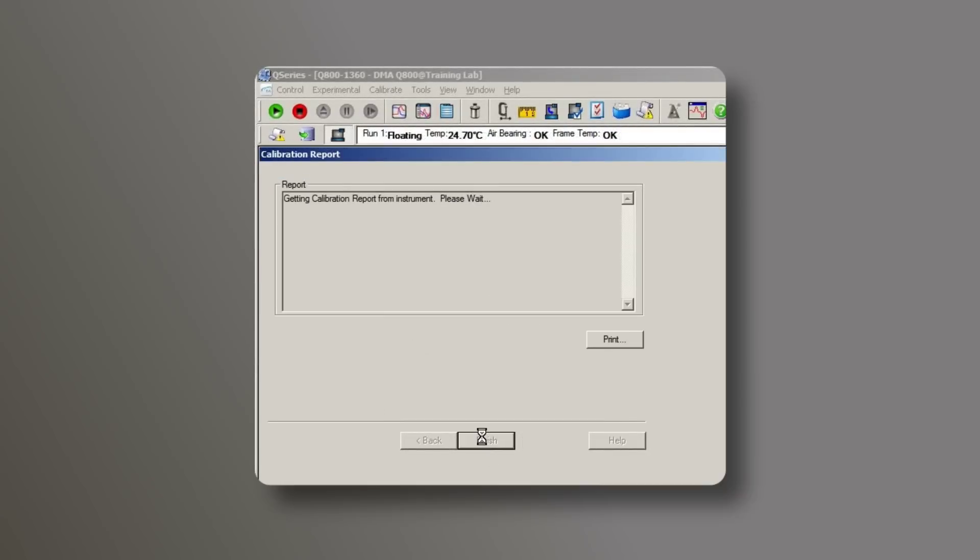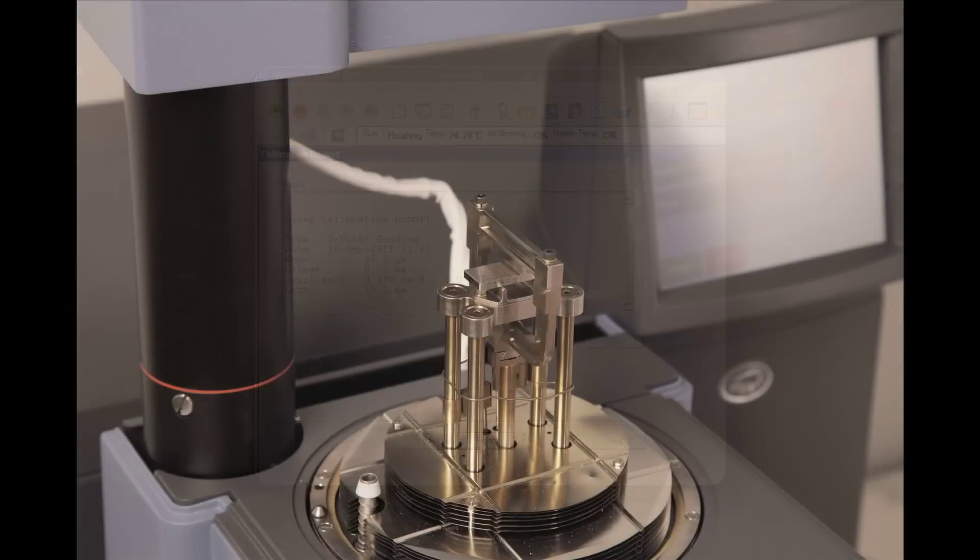After the calibration, check the report. Make sure the clamp compliance value is lower than the maximum value that is shown on the right side of the screen. You have now finished the small three-point bending clamp calibration.